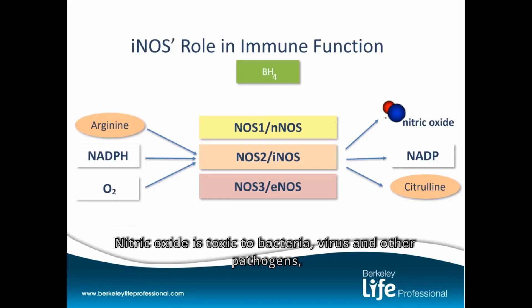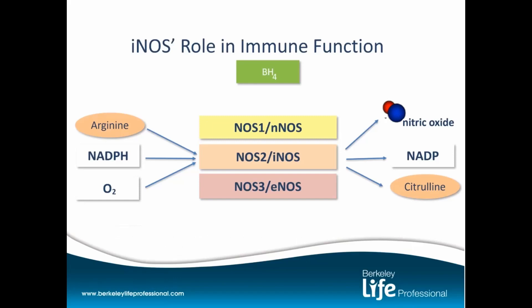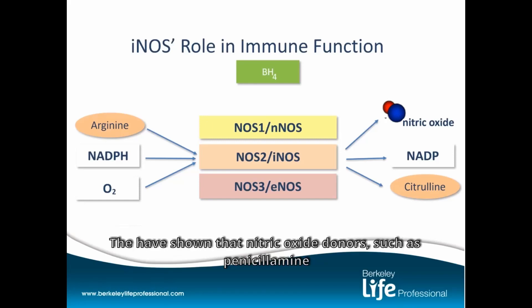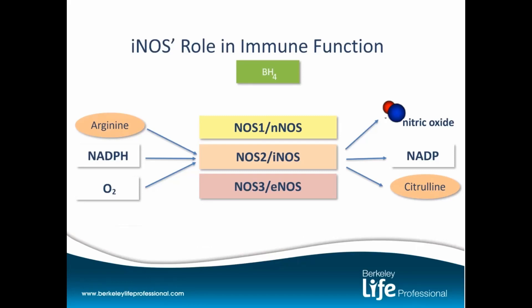Nitric oxide is toxic to bacteria, viruses, and other pathogens. Nitric oxide donors, such as penicillamine, as well as nitrates and nitrites — which can be considered nitric oxide donors — have been shown to inhibit viral replication.